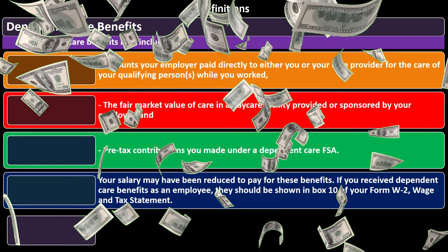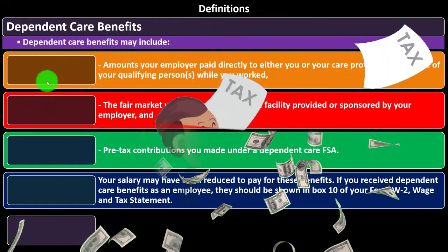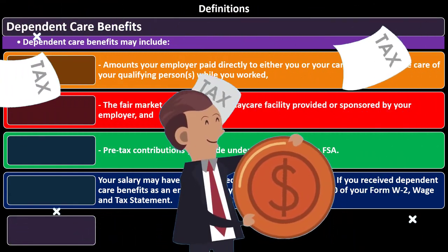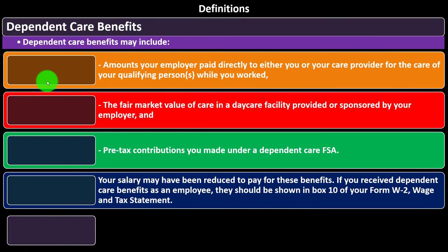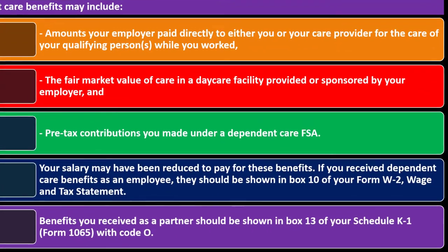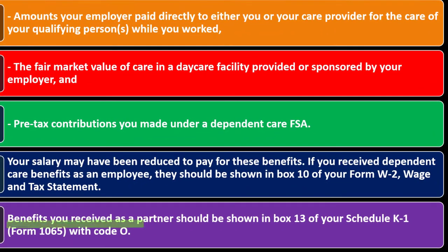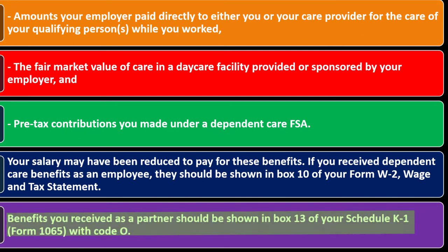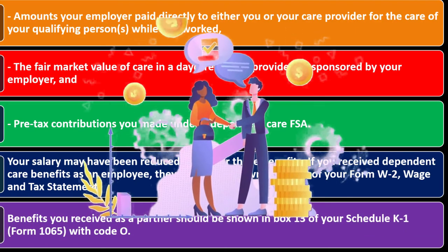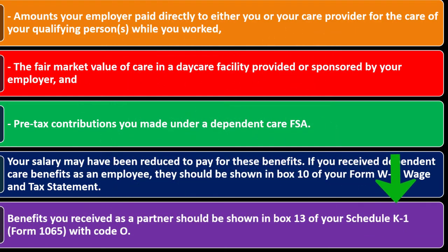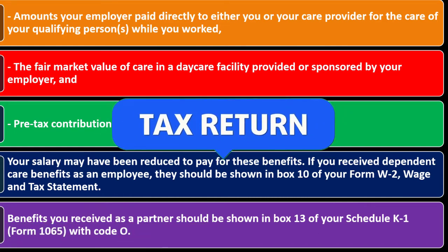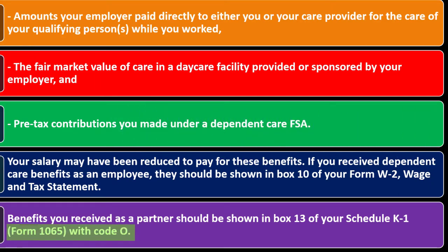Your employer can give you money that hopefully wouldn't be subject to taxes because it would be in Box 10, so you could look into that in more detail if applicable. Benefits you receive as a partner should be shown in Box 13 of your Schedule K-1 — the flow-through document from Form 1065, the tax return for a partnership, with Code O.